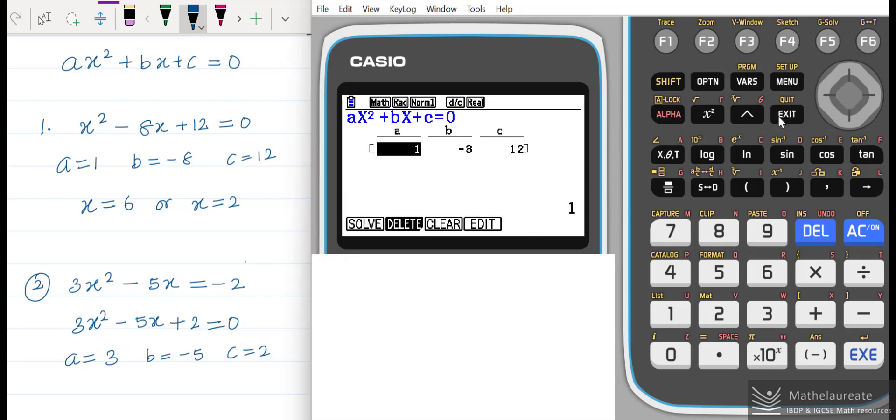Exit here and then again we are in the polynomial and degree 2 section. We need to remove the values which we entered in the previous question and enter these values: a is equal to 3, b is minus 5, and c is 2.